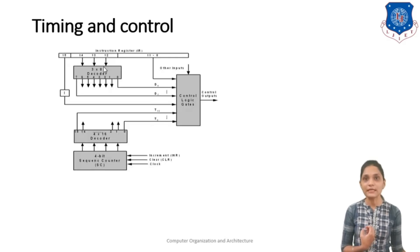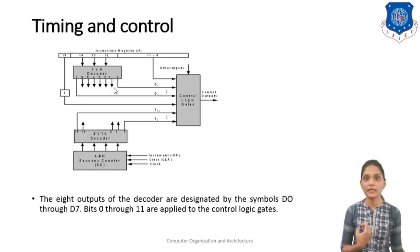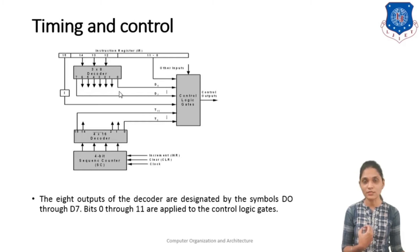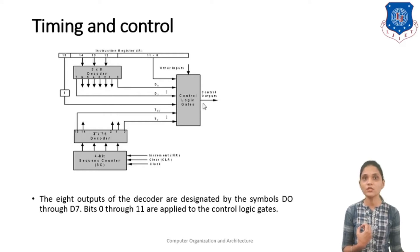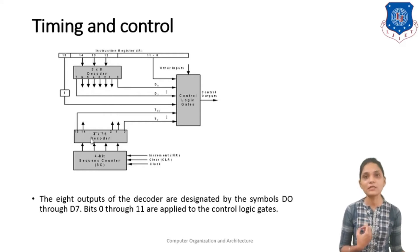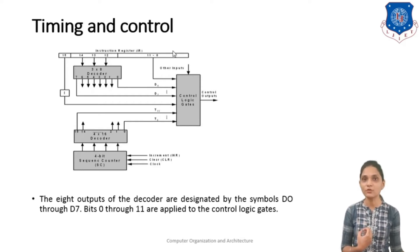This is your instruction output decoding. Next, we use the 8 outputs of this decoder, designated by the symbols D0 to D7. These are provided to the control unit, and bits 0 to 11 are applied to the control logic gate to provide the address.